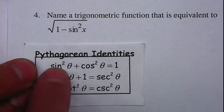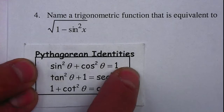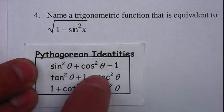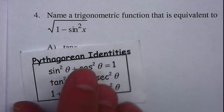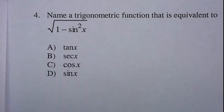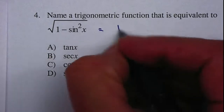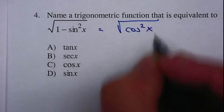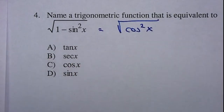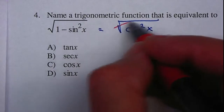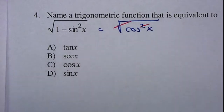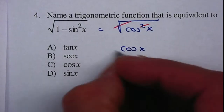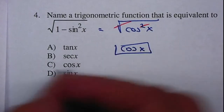If you move your sine to the right, this will equal cosine squared. So therefore I'm going to replace it as the square root of cosine squared of x. The square root and the square cancel, so therefore I have cosine of x, which is letter C.